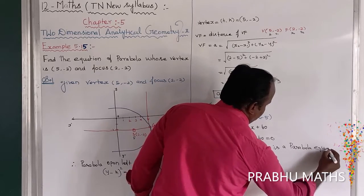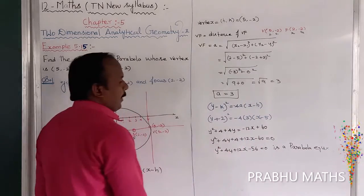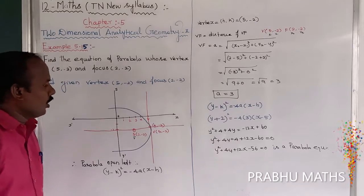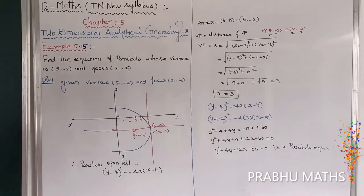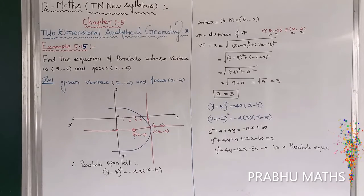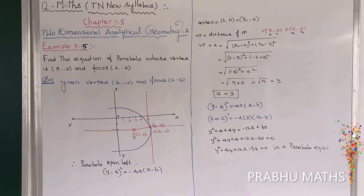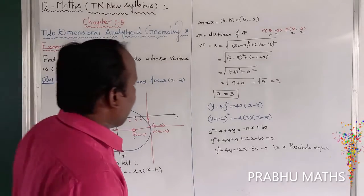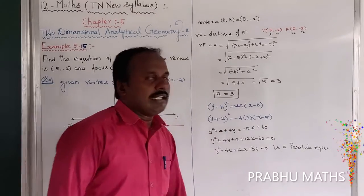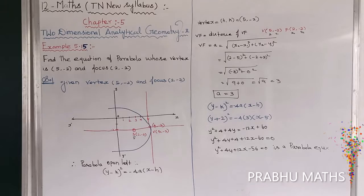That is the equation of the parabola. The steps are: draw the diagram, determine left-side or right-side open, find H and K from the vertex, find A from the distance formula, then apply and expand the general form of the parabola.